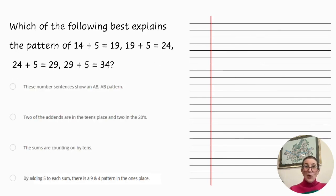The final question. Which of the following best explains the pattern of 14 plus 5 equals 19, 19 plus 5 equals 24, 24 plus 5 equals 29, 29 plus 5 equals 34. So the first option is these number sentences show an A, B, A, B pattern. They do not. Two of the addends are in the teens place and two in the 20s. That doesn't explain the pattern.